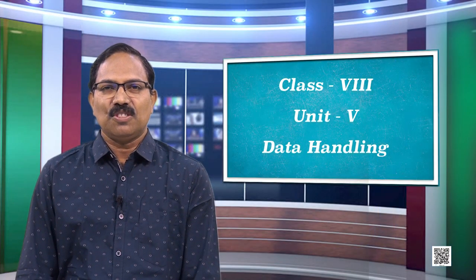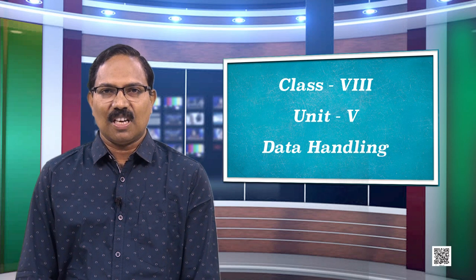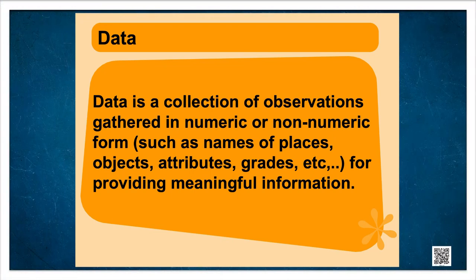Students, where do you see such information? Yes, in newspapers, in TV reports, in annual reports of various companies or bulletins of government agencies. Such information collected from various sources is called data. This can be in a numeric or non-numeric form. Data is a collection of observations gathered in numeric or non-numeric form, such as names of places or names of objects, for providing meaningful information.